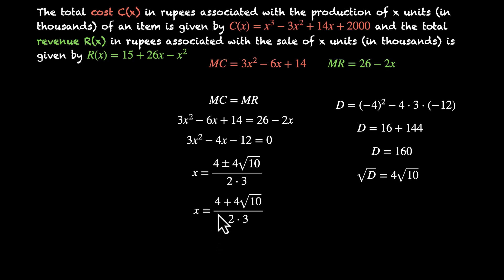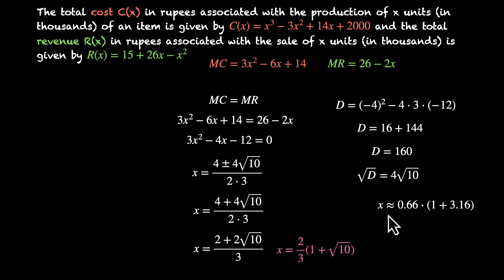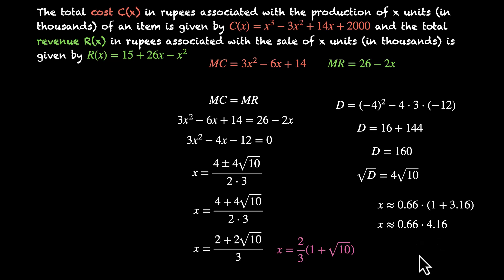The valid solution is x = (4 + 4√10) / 6 = (2 + 2√10) / 3 = (2/3)(1 + √10). Approximating √10 ≈ 3.16 and 2/3 ≈ 0.66, we get 0.66 × 4.16 ≈ 2.74. So approximately 2740 units are produced and sold when marginal cost equals marginal revenue.